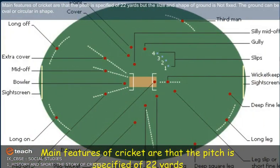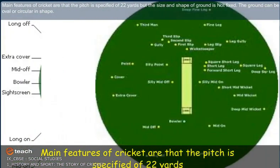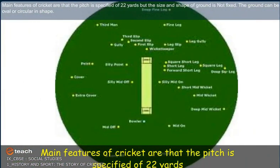The main features of cricket are that the pitch is specified at 22 yards, but the size and shape of the ground is not fixed. The ground can be oval or circular in shape.